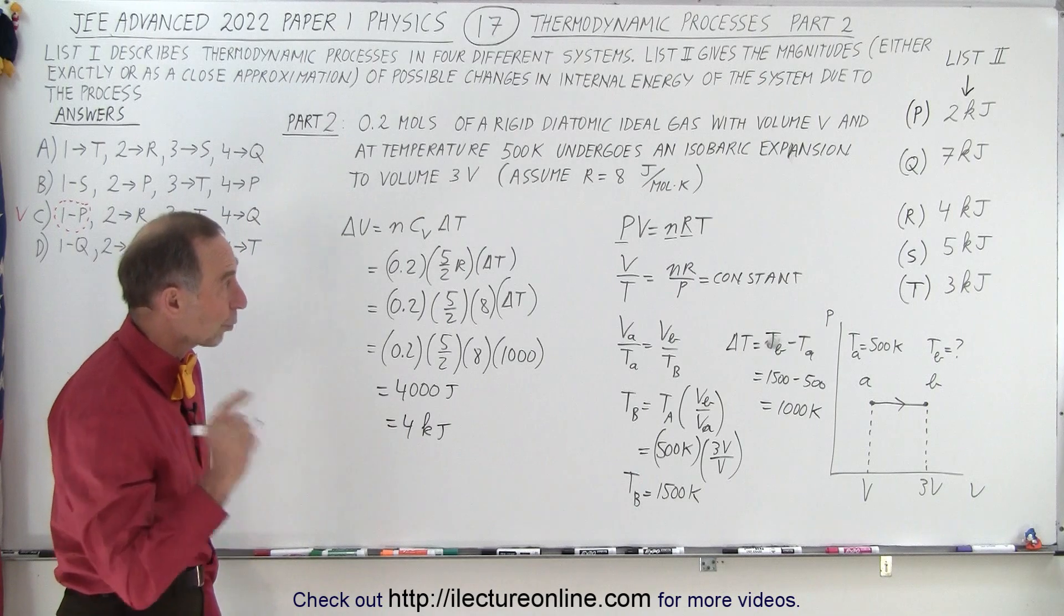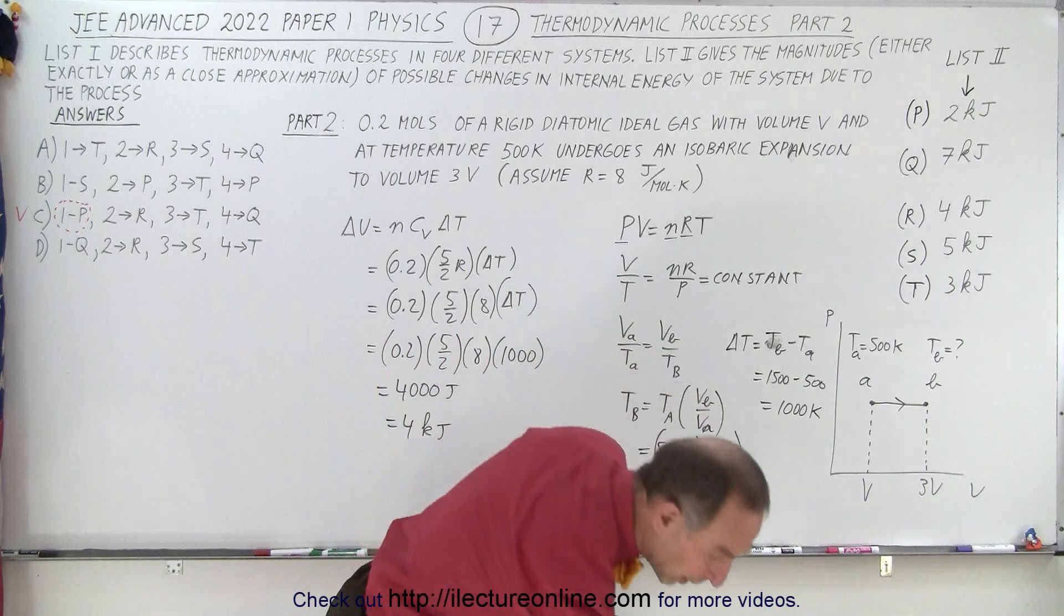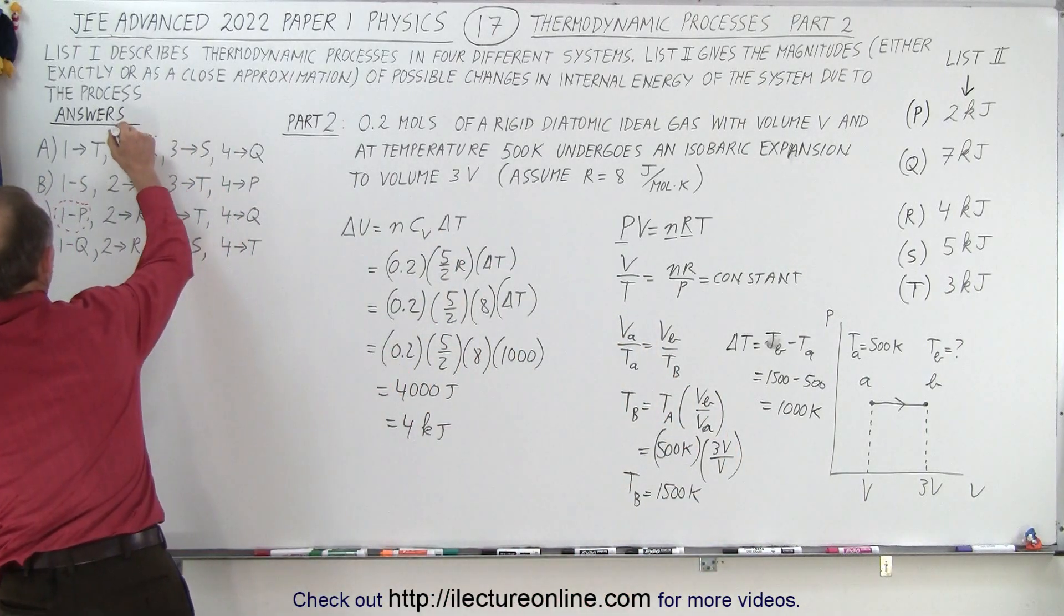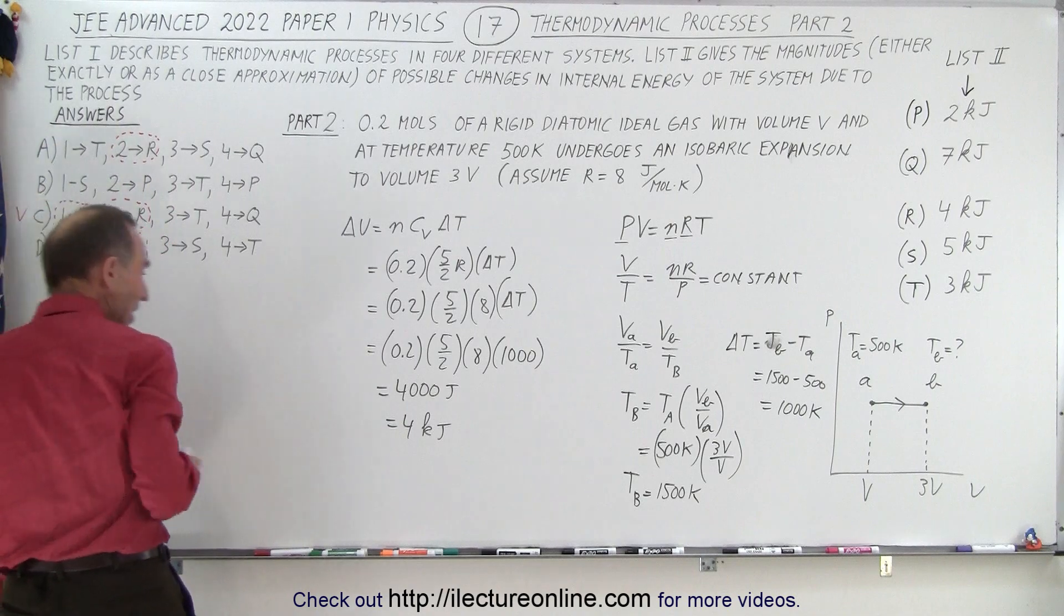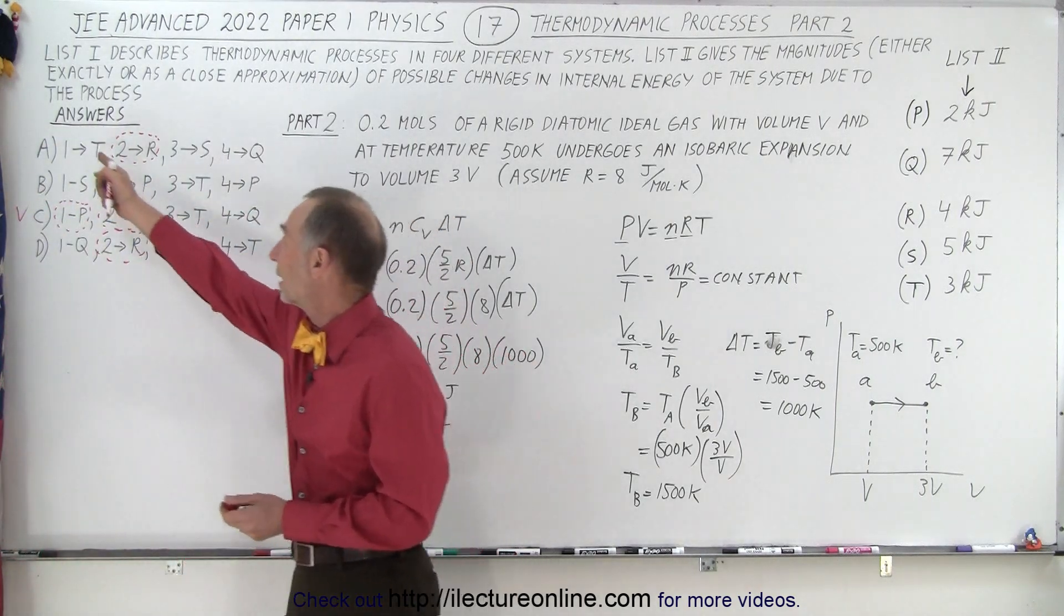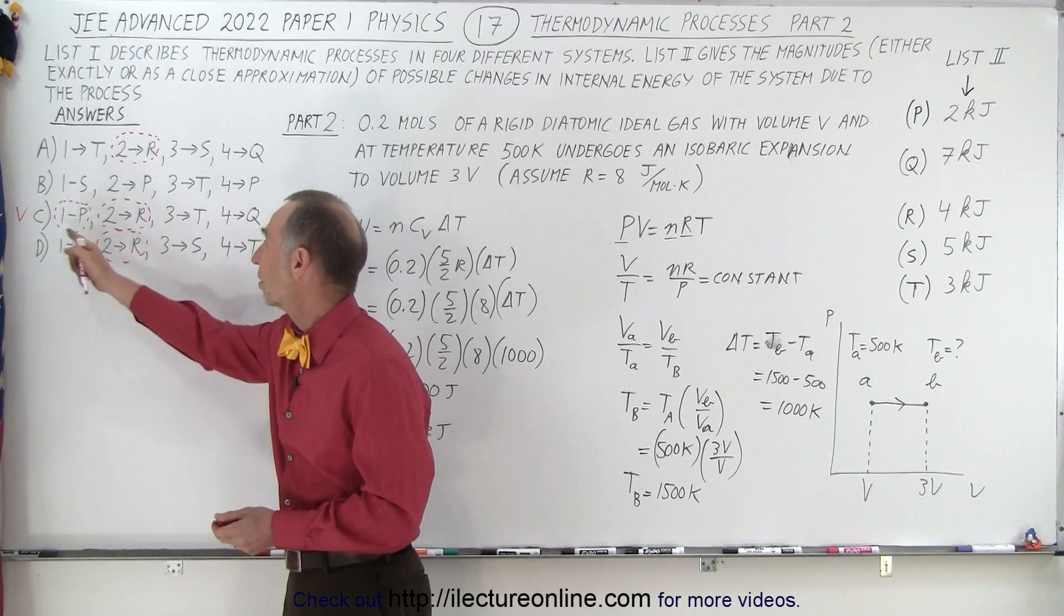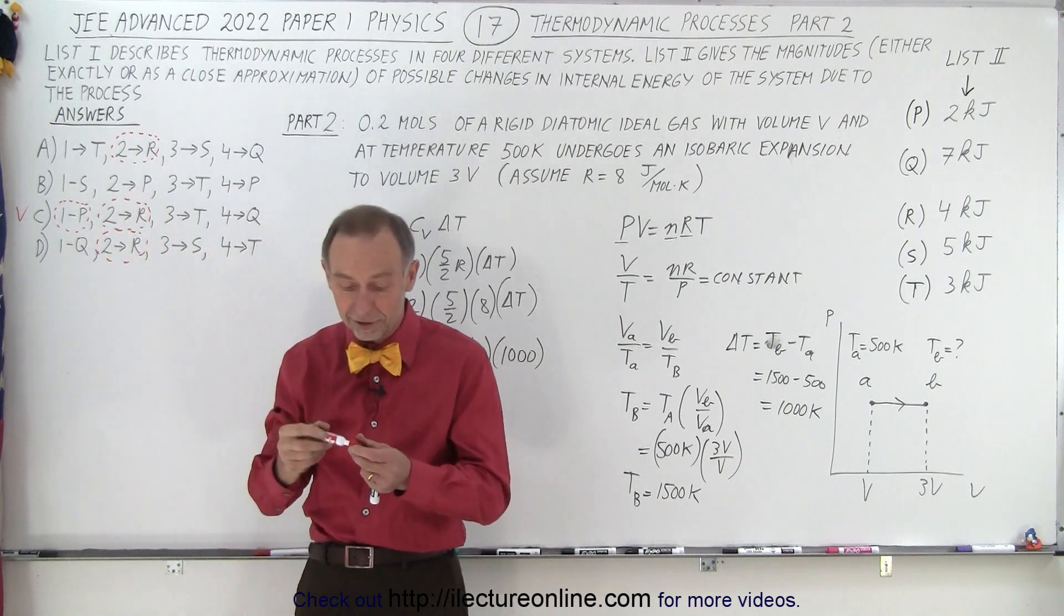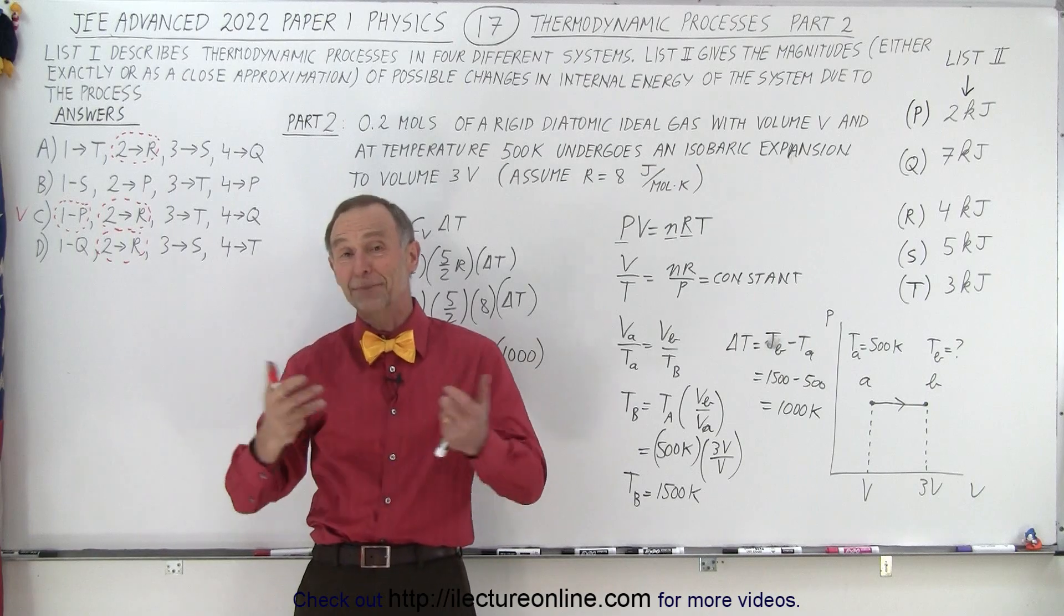And notice that that's one of the answers, that's answer R, which means that for our second part, the answer is R, which means we have three possible answers. Of course, A and D are not possible answers because we didn't get the correct answer for part one. But notice there's consistency here. So far, we can see that C is indeed still the correct answer because we got the same answer for part one and part two. That's answer C. And that is how it's done.